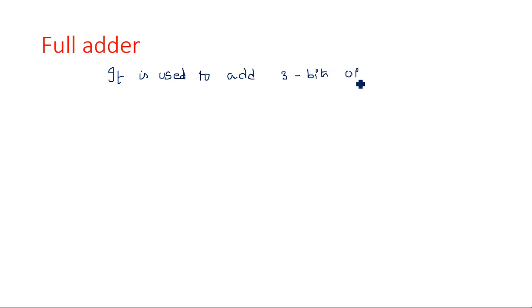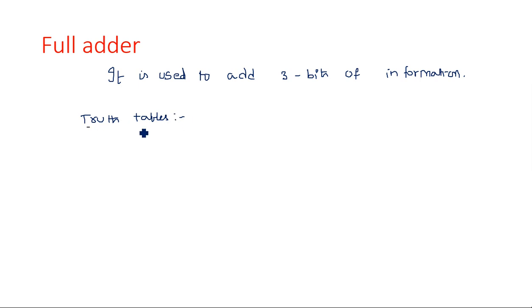The full adder is used to add three bits of information. The procedure we will follow is: first, we start with the truth table, then we derive expressions using K-maps, and then we draw the logic circuit. So the order is: truth table, then K-map, then logic circuit.